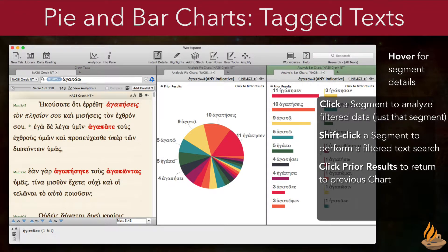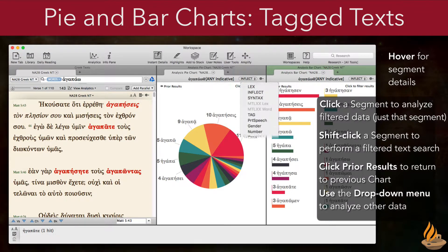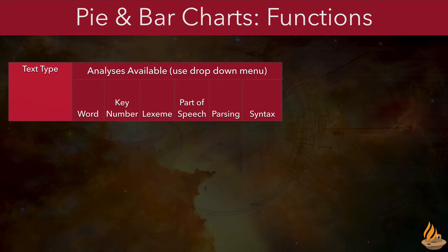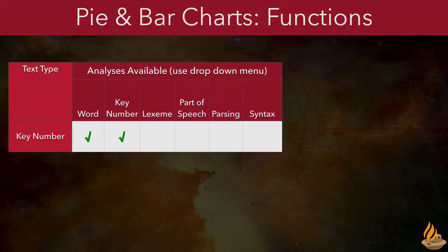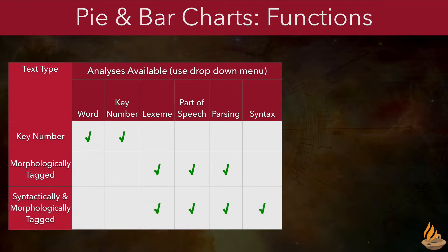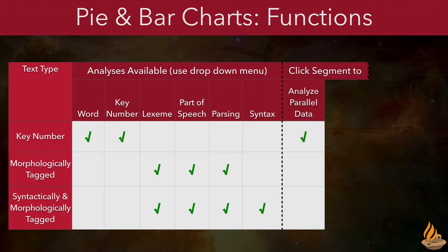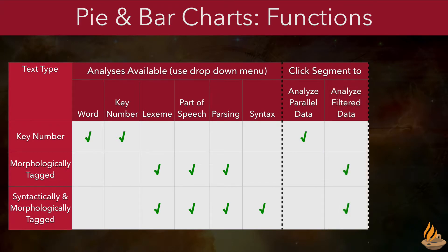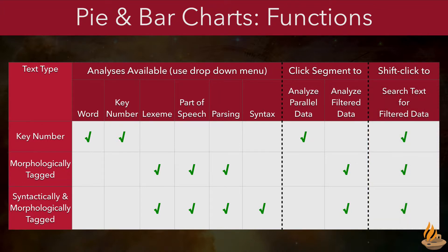Remember that we can analyze different kinds of data simply by making different choices from the pane's drop-down menu. Here's a table that summarizes Accordance 12's improved pie and bar charts by text type. Key number texts allow us to analyze by word and key numbers — the equivalent of original language words. Morphologically tagged texts permit analyzing by lexeme, part of speech, and parsing, while syntactically tagged texts add the ability to analyze syntactically. In every case, we can switch the information we are analyzing using the drop-down menu in the pane header. The new features: we can click on a segment to analyze parallel data in key number texts, while the same action allows viewing filtered data on morphologically and syntactically tagged texts. For all three kinds of texts, shift-clicking on a segment will search the text for filtered data.